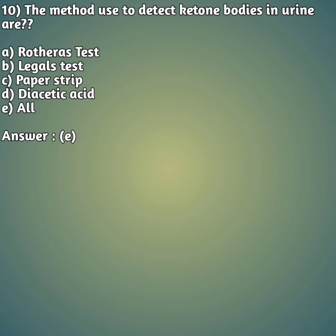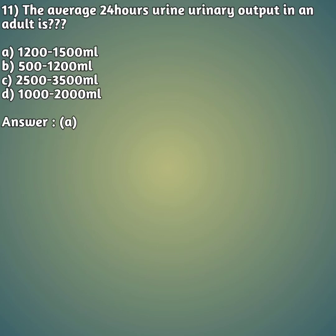Eleventh question: the average 24-hour urinary output in an adult is — option A: 1200 to 1500 ml, option B: 500 to 1200 ml, option C: 2500 to 3500 ml, option D: 1000 to 2000 ml. The normal urine output in an individual should be option A — 1200 to 1500 ml per day.